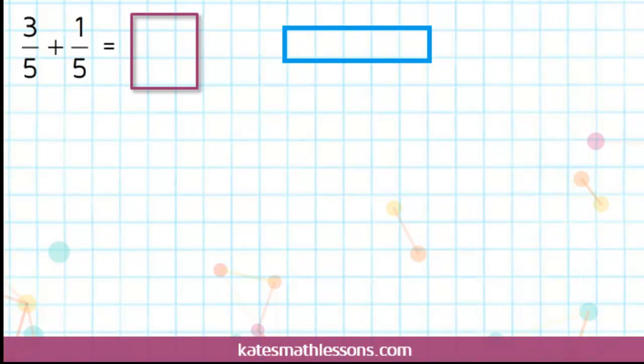We have 3 fifths. 3 fifths means that this rectangle has been split into 5 parts, and that we have 3 out of 5 of those parts. Let's start by dividing the rectangle into 5 equal pieces.